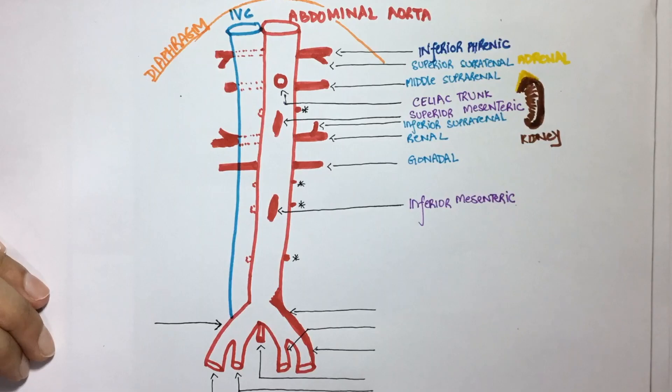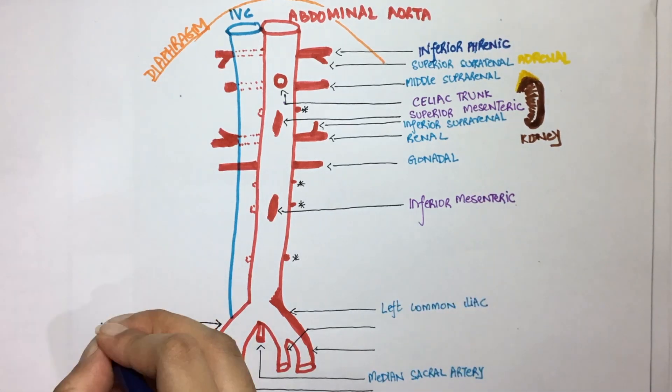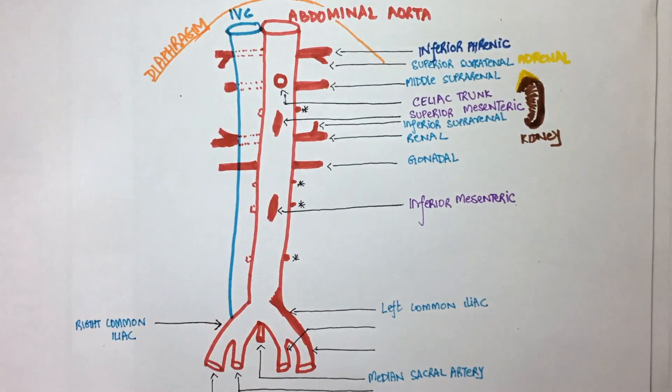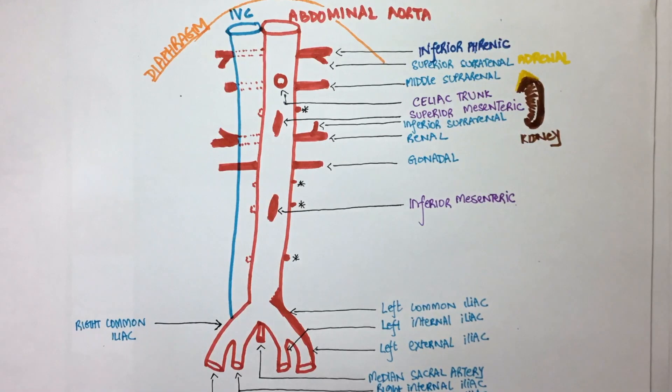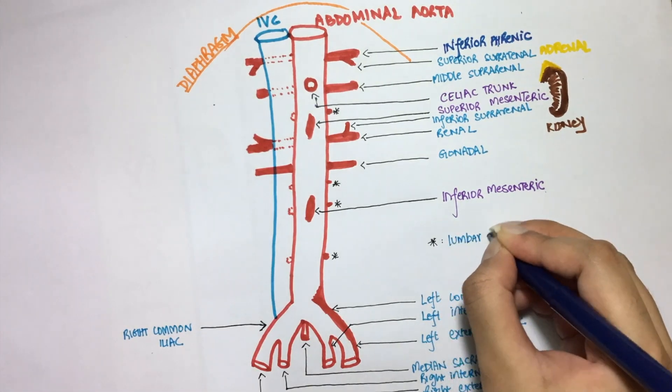The one in the center right here is known as the median sacral artery. The bifurcation of the abdominal aorta takes place at L4. It splits into the right and left common iliac arteries. These further divide into internal and external iliac arteries on either side. These tiny ones are the lumbar arteries.